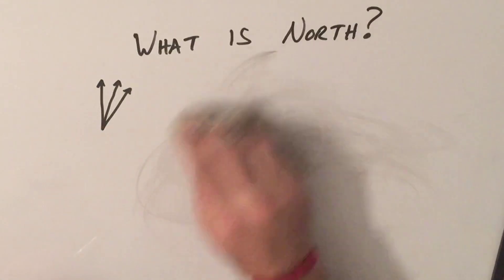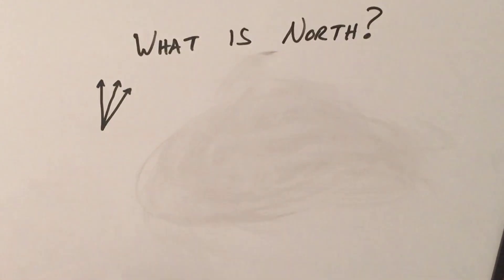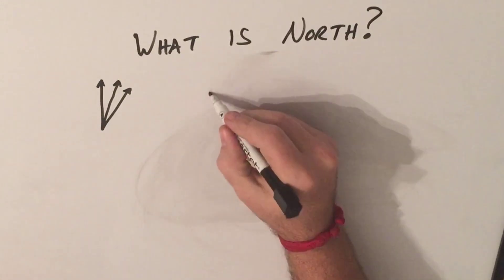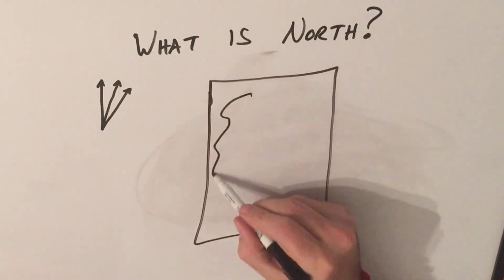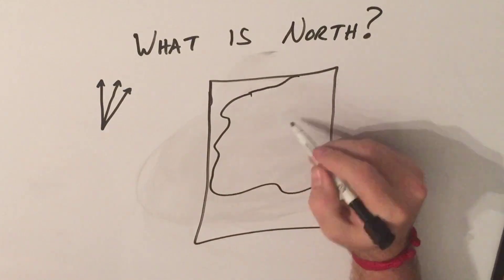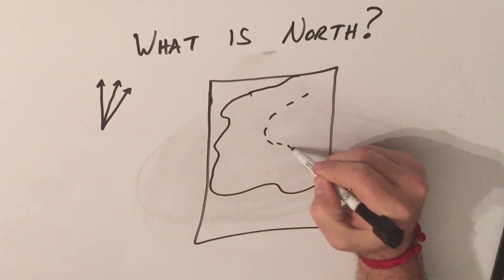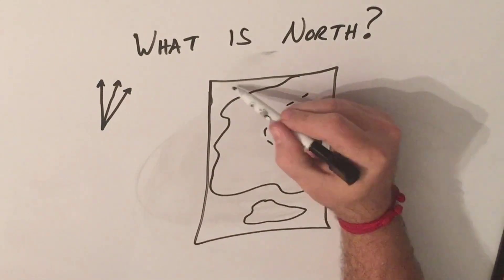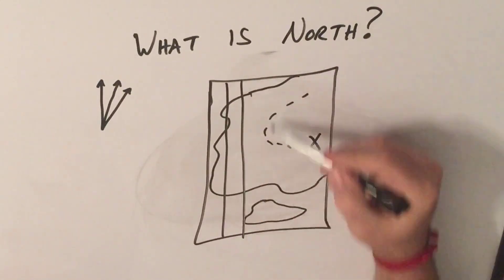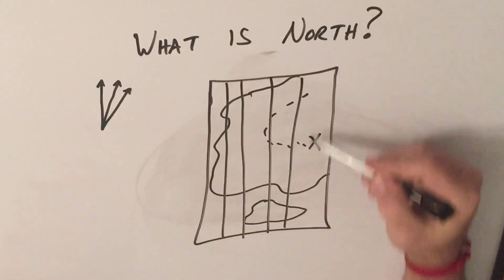Grid North has to do with the map. Since our planet is a sphere, the longitude lines are at slight angles on a map. This is an effect of trying to flatten out a round object.